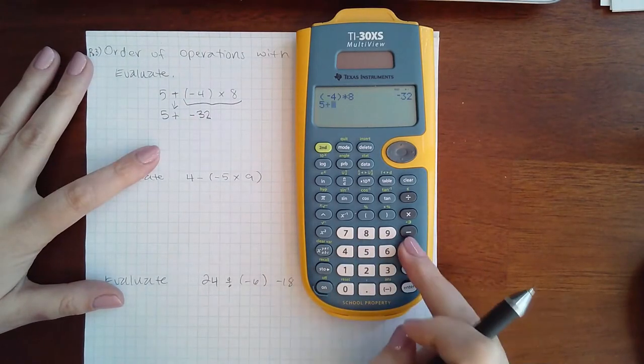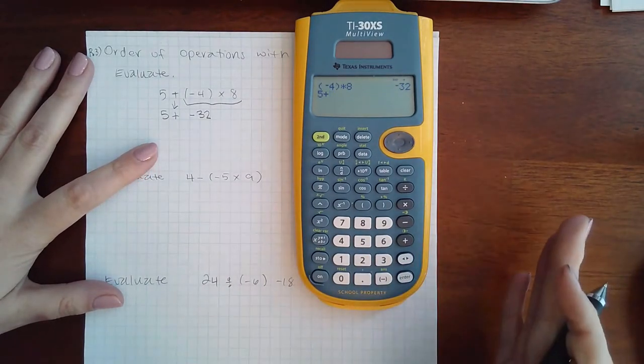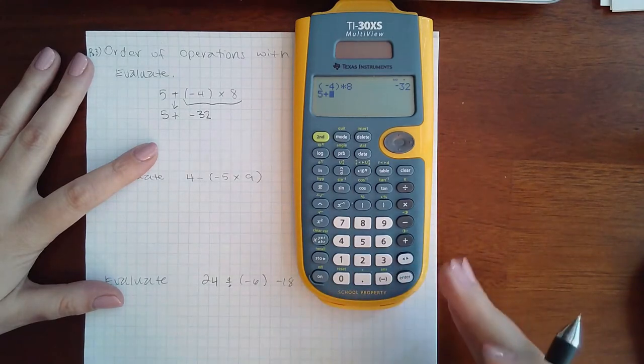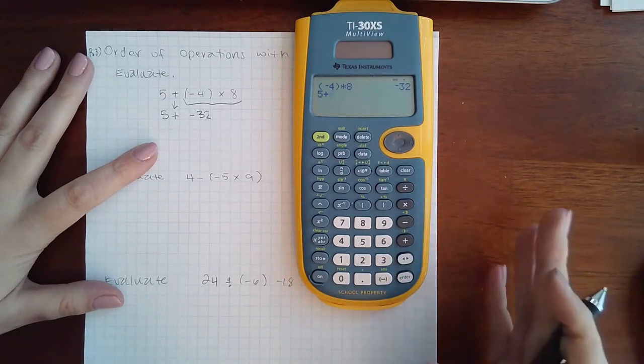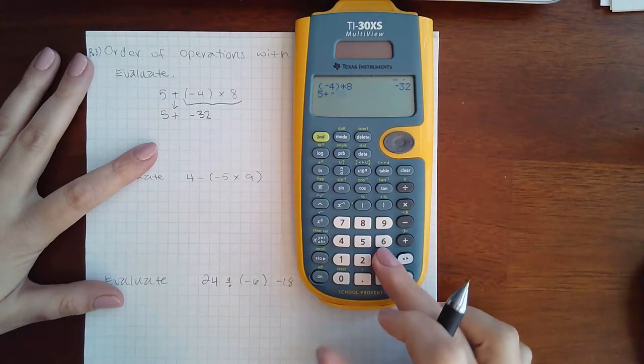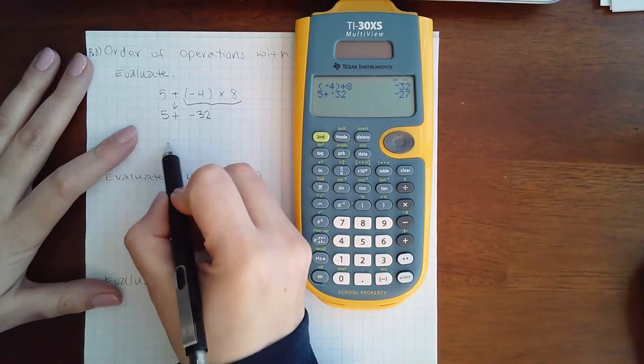Now 5 plus, be careful when you type this in. This is not 5 minus 32 that you're trying to type in. You're trying to type in 5 plus negative 32. So make sure you use this symbol for a negative. Negative 32, and I get negative 27.